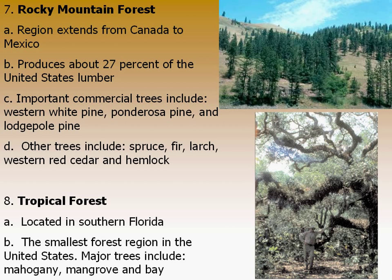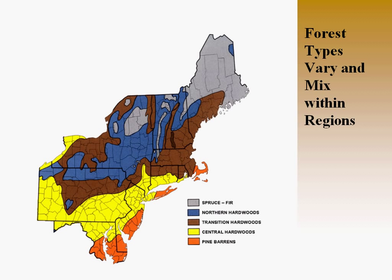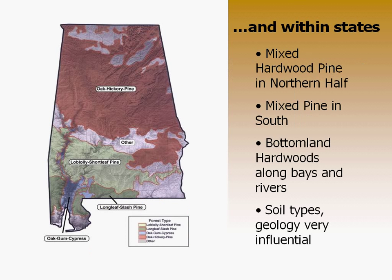It's also important to note that when talking about these forest types, there's not a clear-cut line distinguishing one forest type from another. Different forest types mix within certain regions. This slide shows how forests are mixed in the northeast, from spruce-fir forest to northern hardwood forests, with central hardwoods overlapping in the transitional hardwood area. There is a lot of diversity and mixing within regions. The same thing applies within states — using Alabama as an example, the northern part of the state is dominated by oaks, hickories, and pines, but there is a mix there.